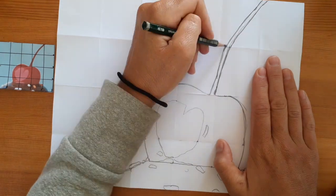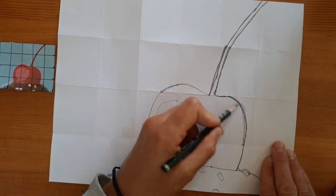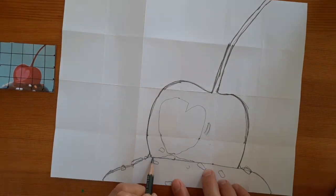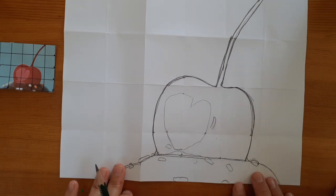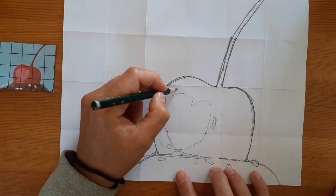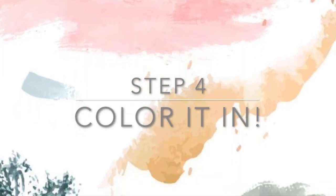Before I color it in, I like to go over all the lines I've created to smooth them out so they don't look so straight and geometric. All that's left now is just adding in a few extra details and now coloring it in.